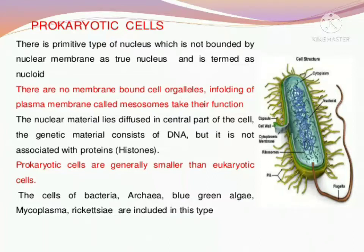In prokaryotic cells, no membrane-bound organelles are present. Meaning organelles like mitochondria, chloroplast, Golgi complex, or endoplasmic reticulum — all these organelles that have some kind of membrane surrounding them — are absent in prokaryotic cells.